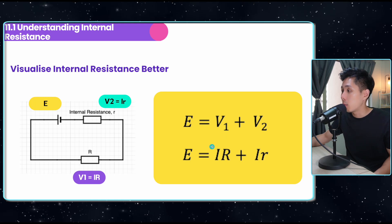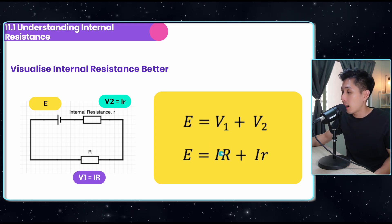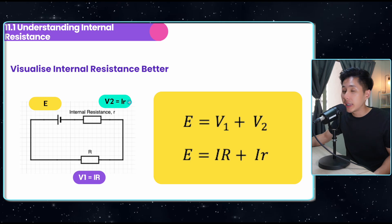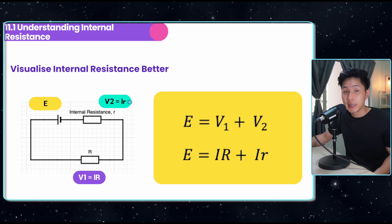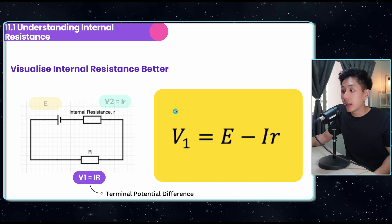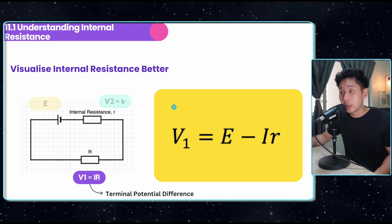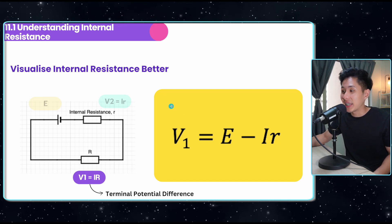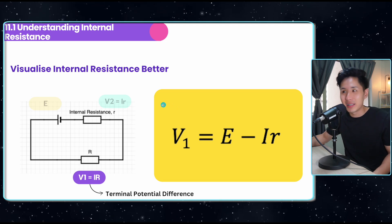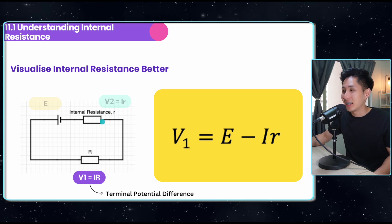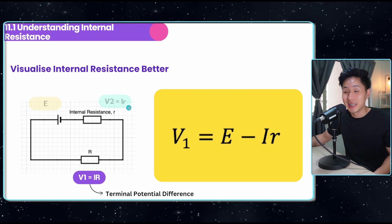Because V equals IR, we can also break down the formula into IR plus IR. The lowercase r here represents the internal resistance of the power source. One thing you need to understand is the concept of terminal potential difference. The way I see it is like the leftover potential difference after deducting the voltage contributed to the internal resistance.